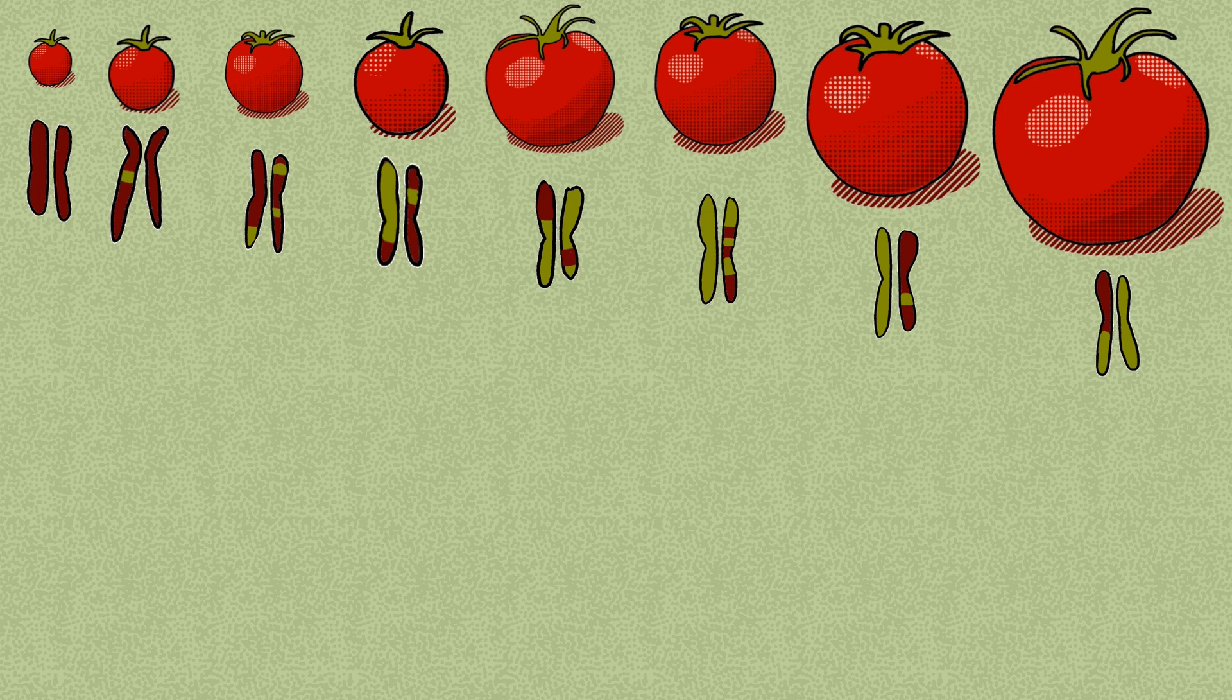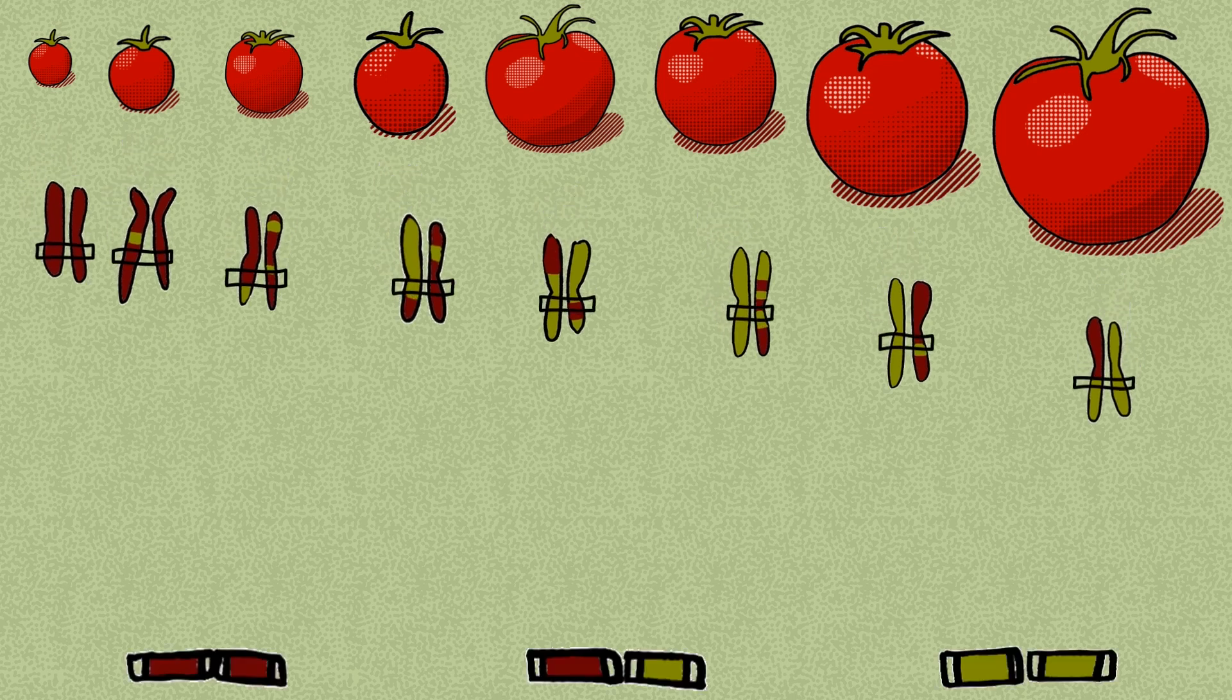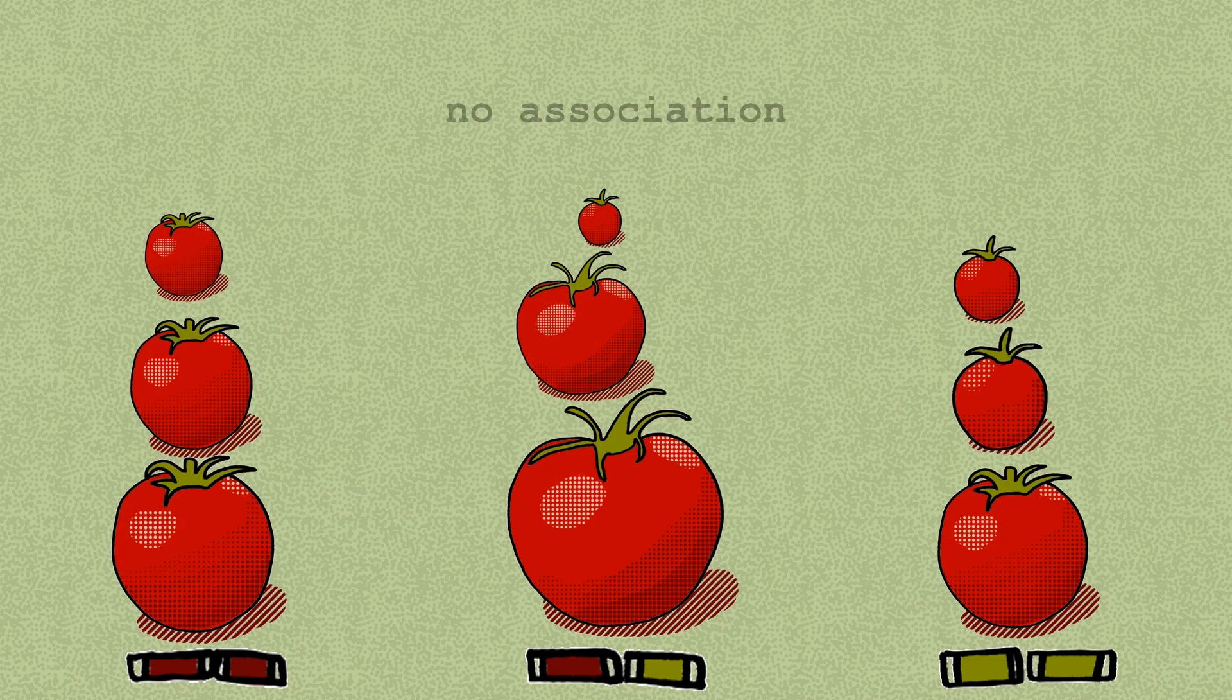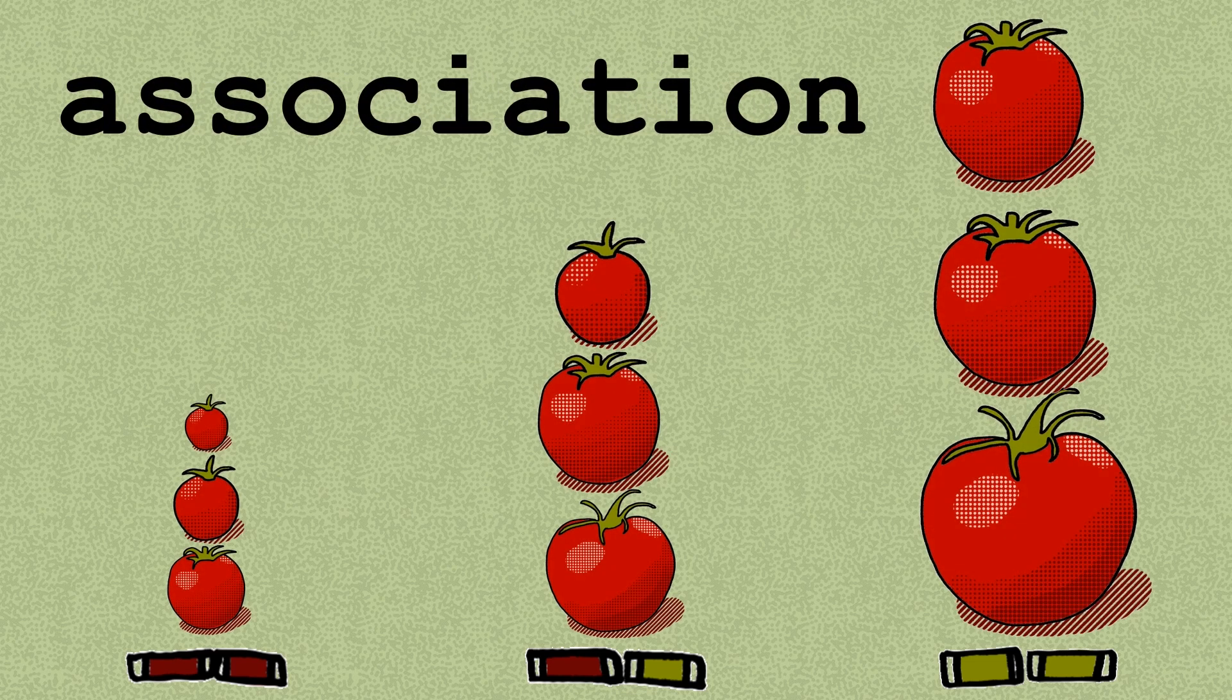For each point on our map, called a marker, there are three possible genotypes. We'll compare the size of the tomatoes across these three genotypes. If they're all similar, then that marker is not associated with the size gene. If they're significantly different, then that marker is associated with the size gene.